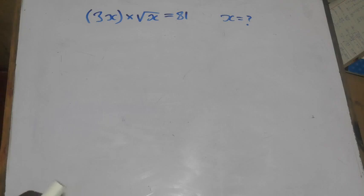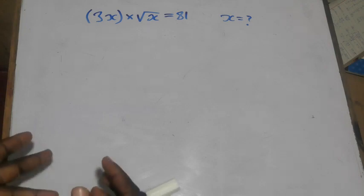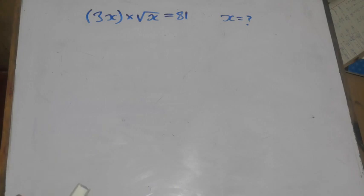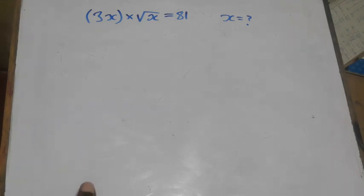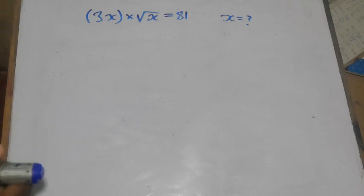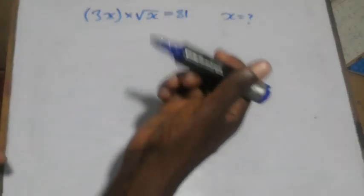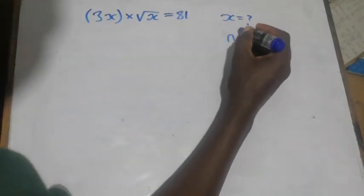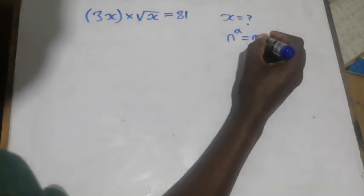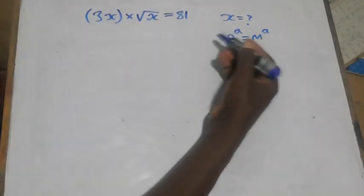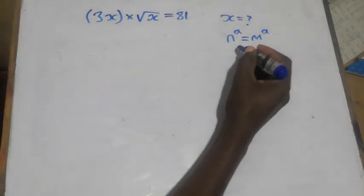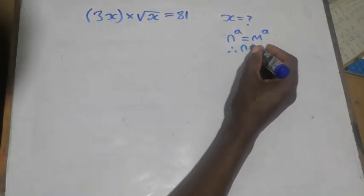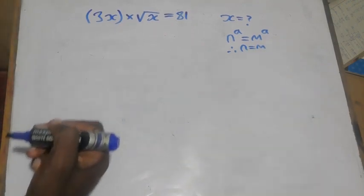Exponential equations are classified into two: we have a non-power problem and a non-base problem. This is a non-base problem. When you are asked to look for the power, it is a non-power problem. For the unknown base problem, we balance the powers using the rule: n to the power a equals m to the power a, so if the bases are equal, then n equals m.